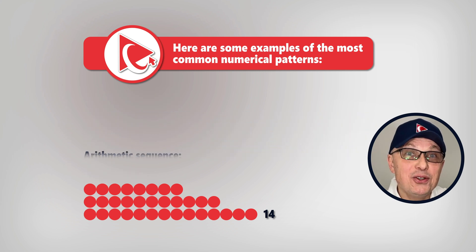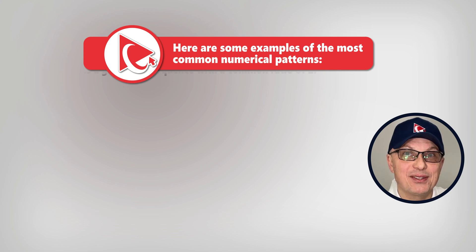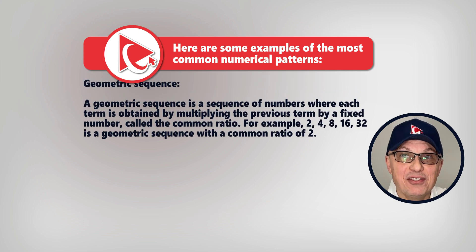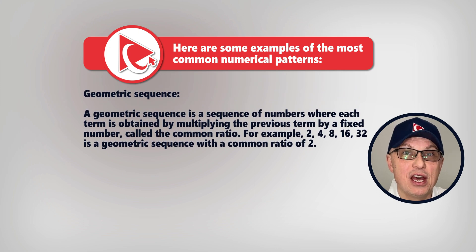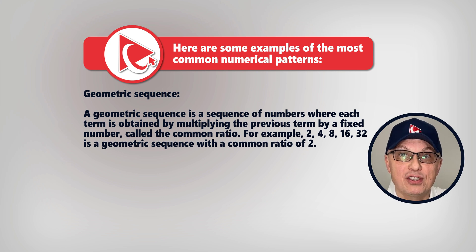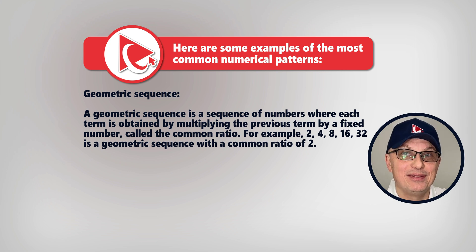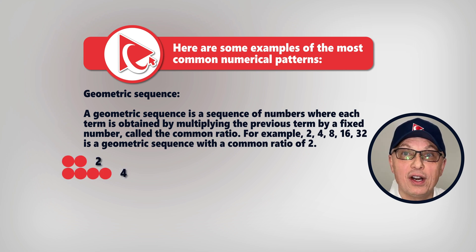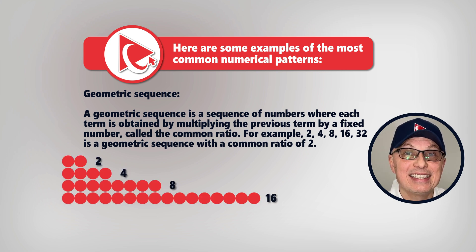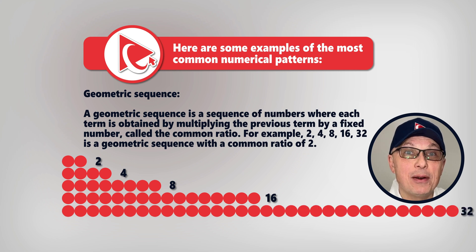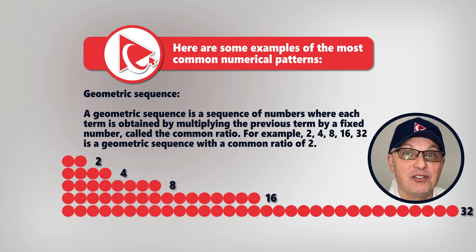Number 2 on the list would be geometric sequence. A geometric sequence is a sequence of numbers where each term is obtained by multiplying the previous term by a fixed number called a common ratio. For example, numbers 2, 4, 8, 16, and 32 represent a geometric sequence with a common ratio of 2.